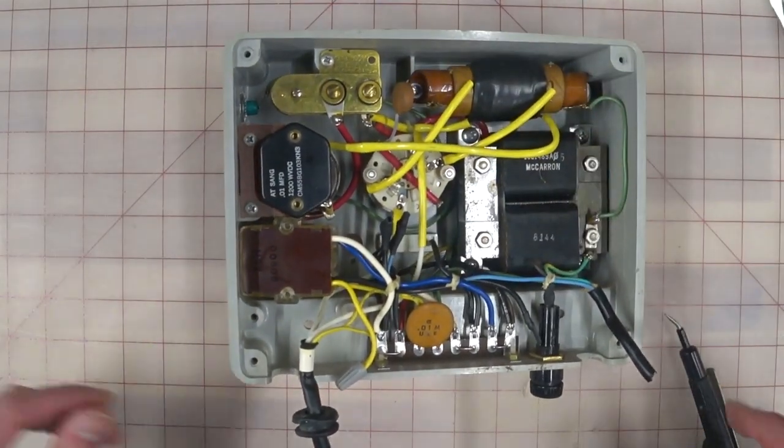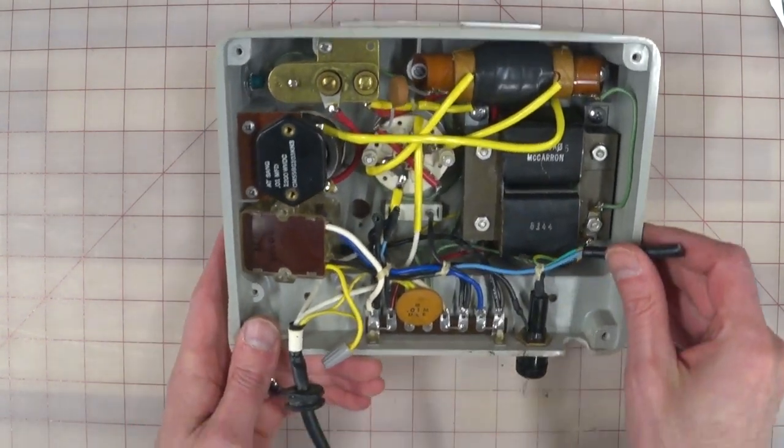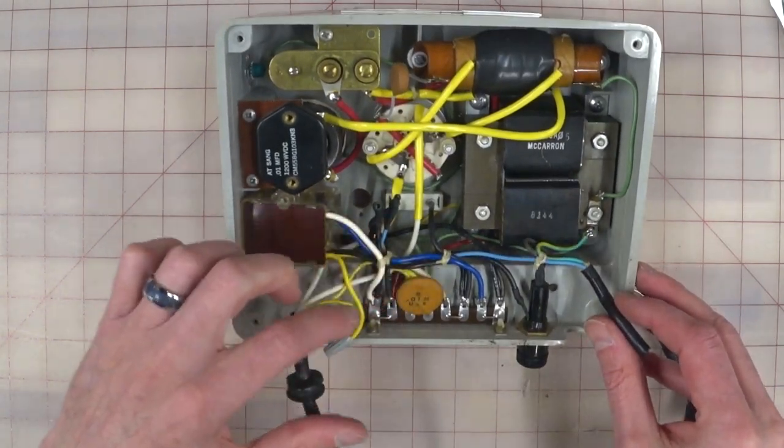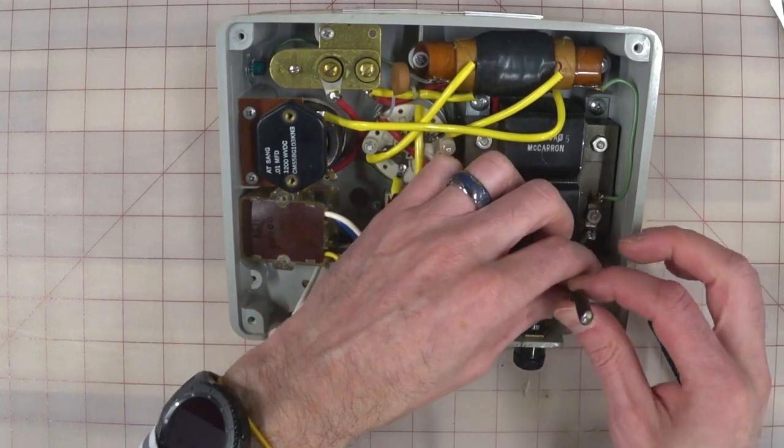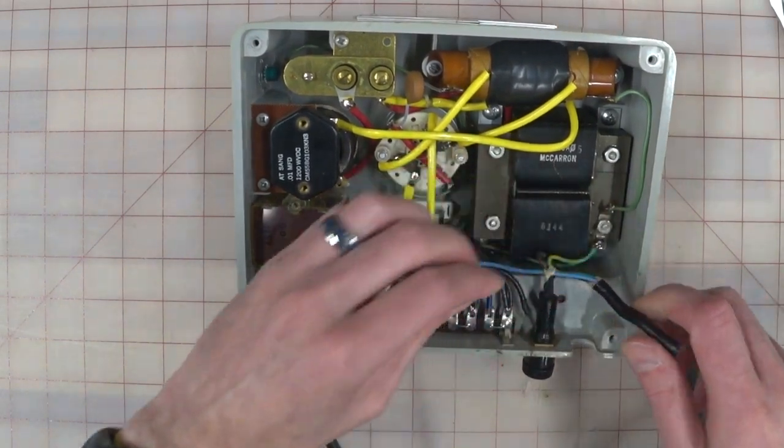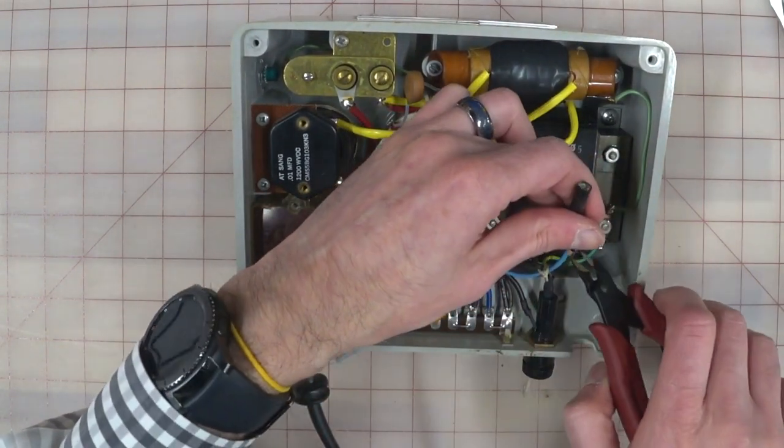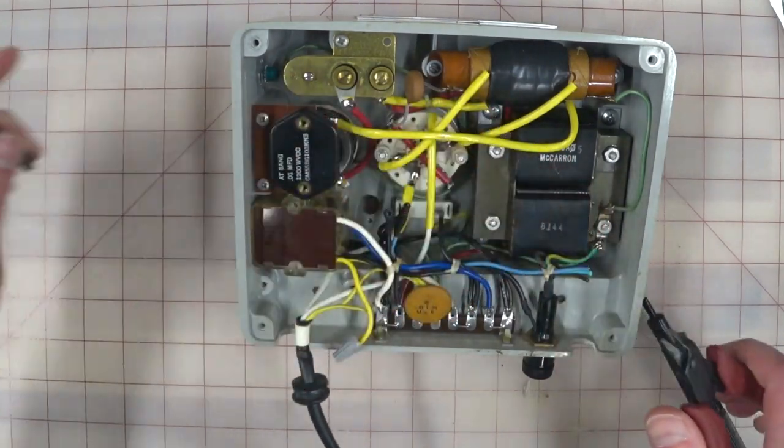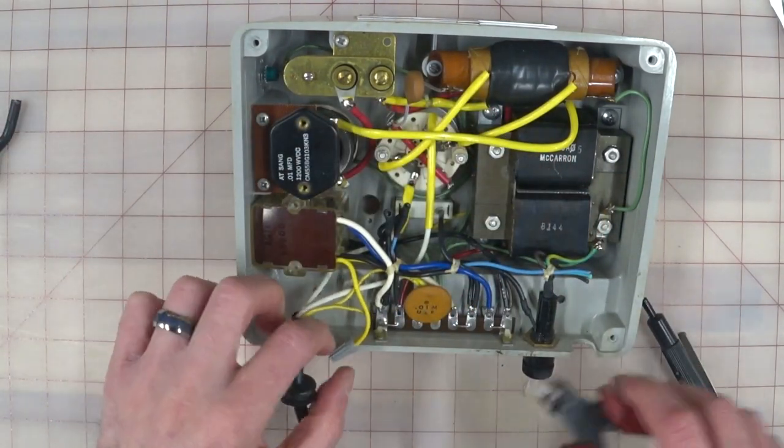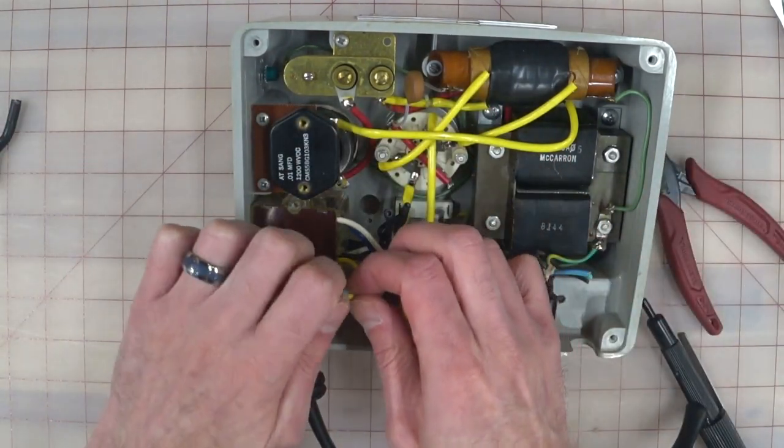All right so where to begin? Let's start simple and just give this a haircut and open things up because we got a lot in here in a very tight space. Oh wire nuts. I hate wire nuts. Learn about Wagos.